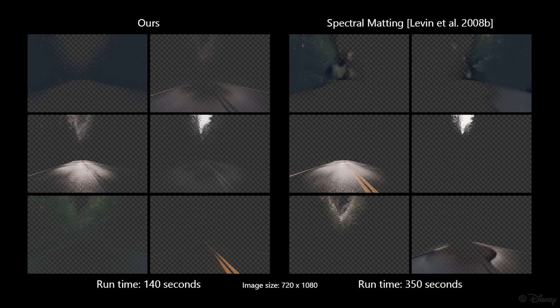Finally, as spectral matting generates a set of spatially connected soft layers, it is not directly applicable to soft color segmentation. Comparisons with these algorithms in a hundred different images are provided in the supplementary material.